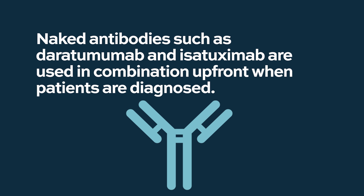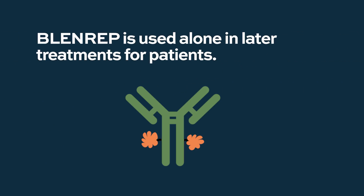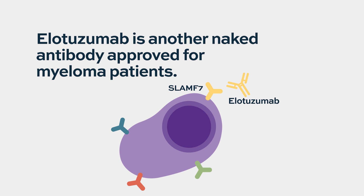Naked antibodies like daratumumab and isatoximab are often used in combination up front when patients are first diagnosed, whereas blenrep, the drug-conjugated antibody, is approved as a single agent and used in later relapses. Elotuzumab doesn't target CD38 but targets SLAMF7. It's approved in combination with IMiDs for relapsed multiple myeloma. Currently there are several naked antibodies and only one drug-conjugated antibody — blenrep.